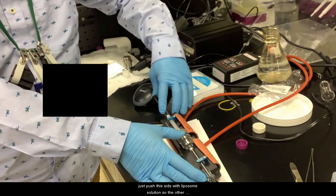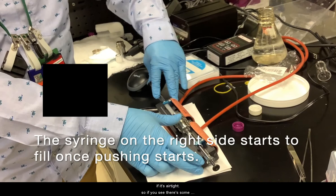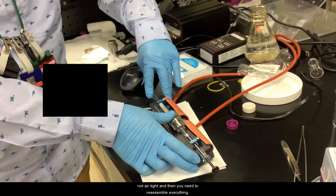The other side will come out automatically if it's air tight. If there's some leakage from those areas, that means it's not tight enough. It's not air tight. Then you need to reassemble everything.